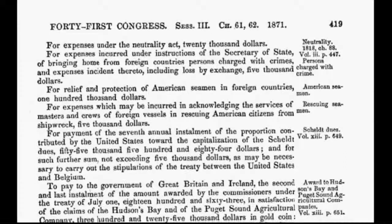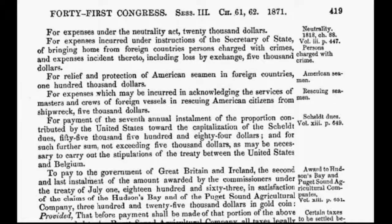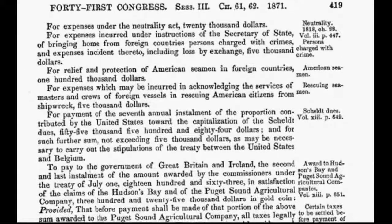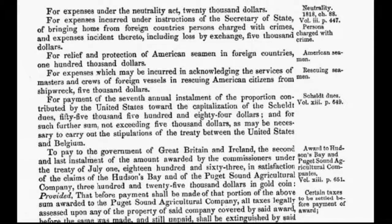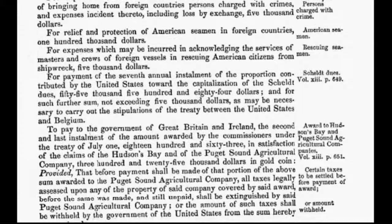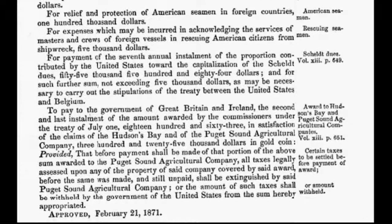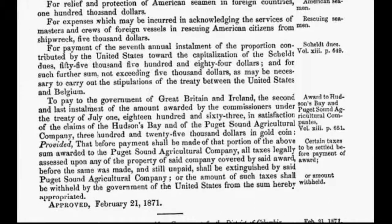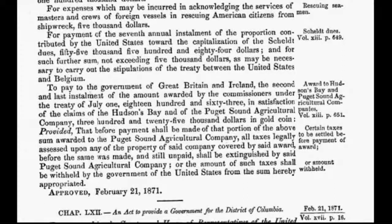In today's program I will put the spotlight on an act that was enacted in the year of 1871 on February 21st. Congress passed an act to provide a government for the District of Columbia, also known as the Act of 1871. What I am about to share with you today is the premise for all the things that are happening here today in the year 2012. When you fully understand the ramifications of the past, you will fully understand the ramifications of the present, and you will know how to change the future. And here is where our story begins.